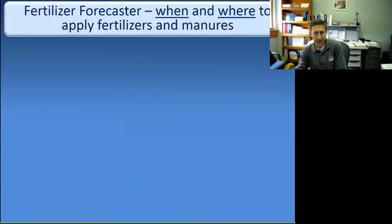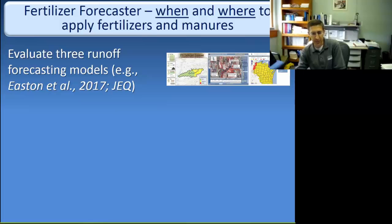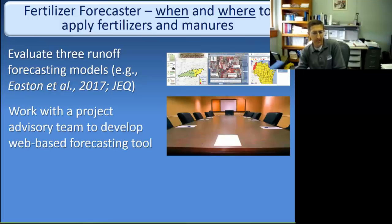The fertilizer forecaster is seen as a way of getting at the when and where in terms of fertilizer and manure application. The basic nuts and bolts of the project is to evaluate various runoff forecasting models. Through Zach Easton's leadership, we have a publication in the Journal of Environmental Quality that compares many of the tools you're hearing about today qualitatively based on their various characteristics and conceptual underpinnings. Our project has an advisory team that includes state agencies, farmers, and researchers to help guide the development of our tool.